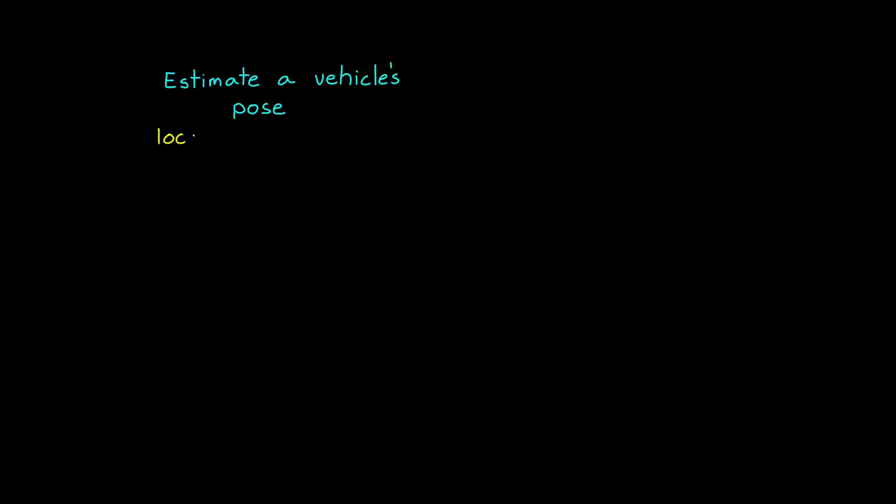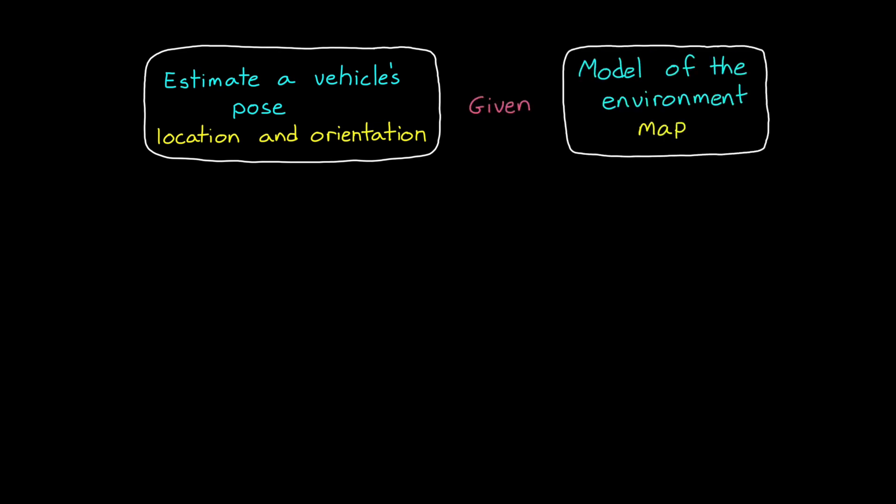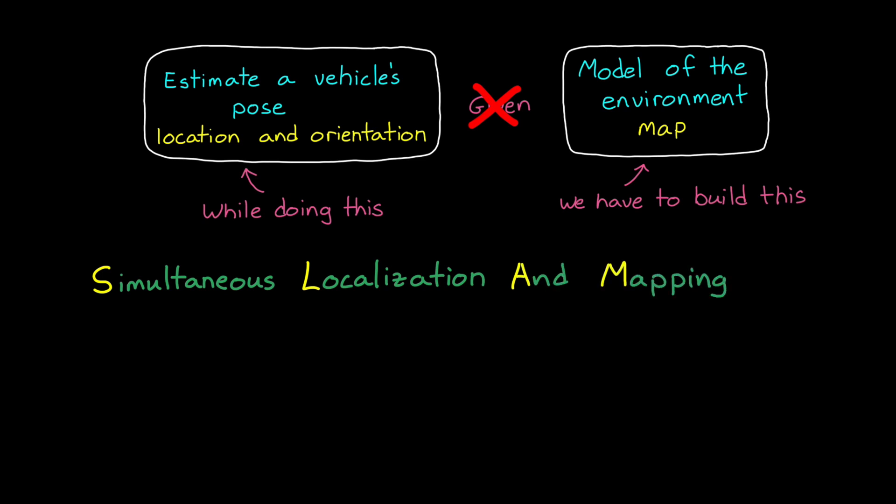In the last video, we talked about how we could estimate an autonomous vehicle's pose - its location and orientation - if we already had a model or map of the environment. In this video, we're not going to have a map ahead of time. We're going to have to build one while simultaneously figuring out where the vehicle is within that map using a process called SLAM, simultaneous localization and mapping.